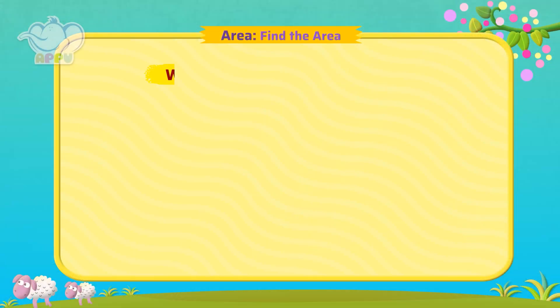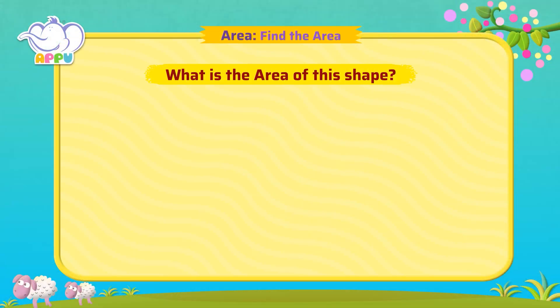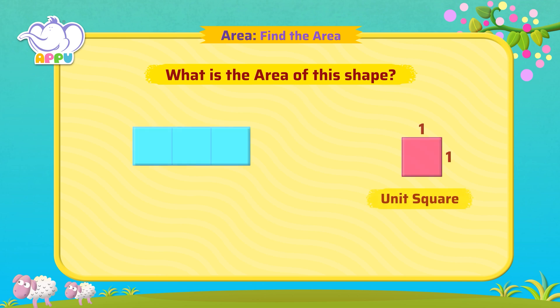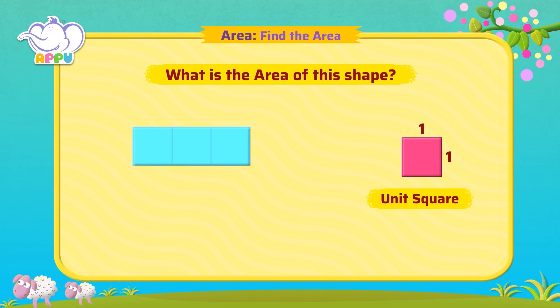What is the area of this shape? A unit square is a square having one unit as side length. To find the area, we need to find the number of unit squares that fits in this shape.